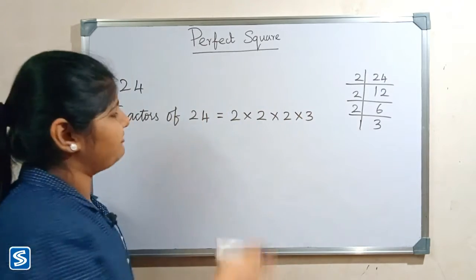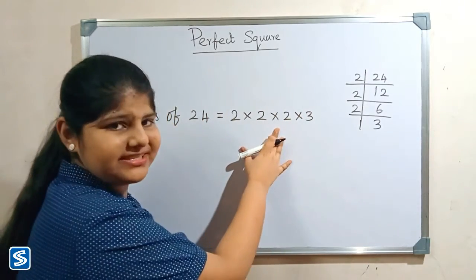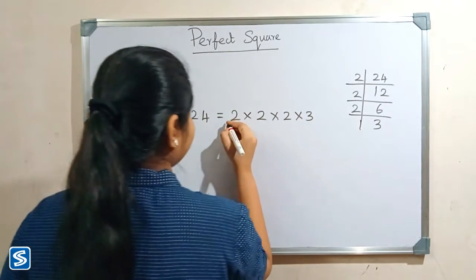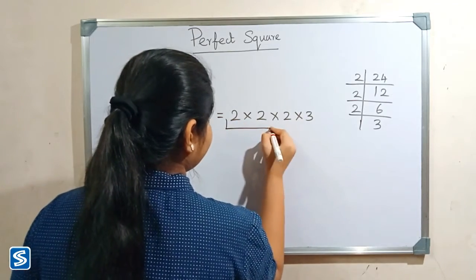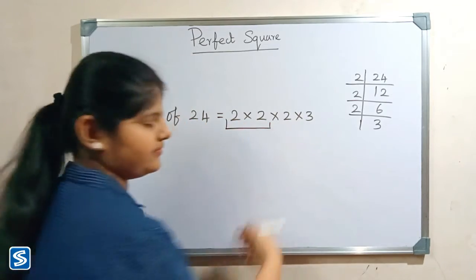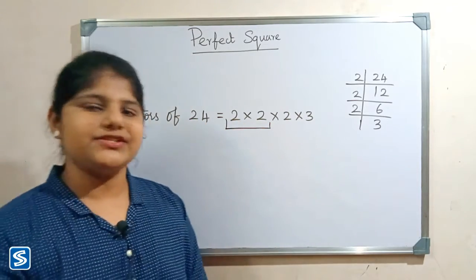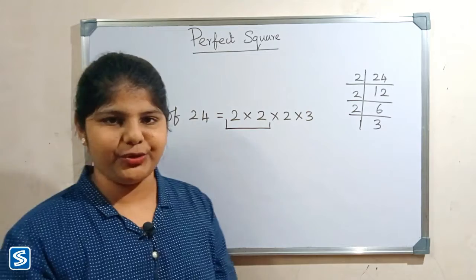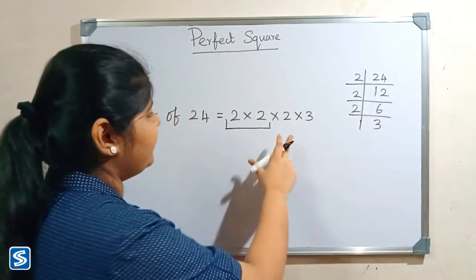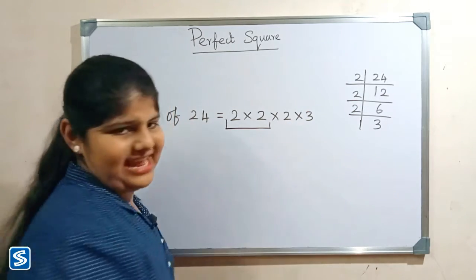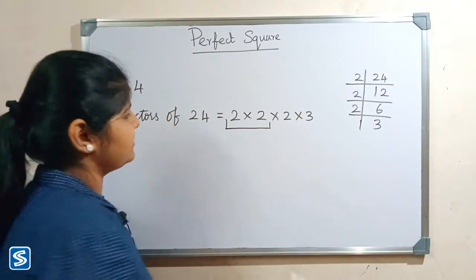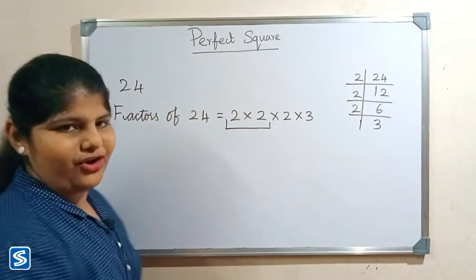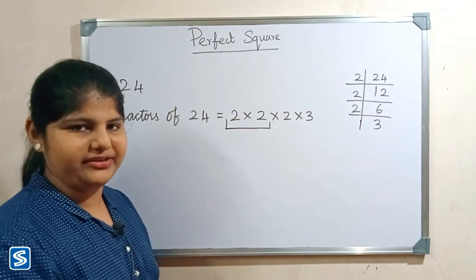Now we have to group the similar factors in pairs. As you can see, after grouping there are 2 factors left. So 24 is not a perfect square.